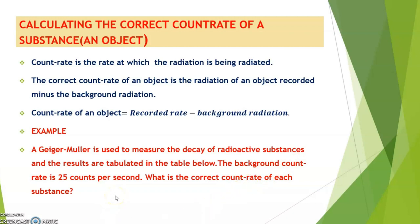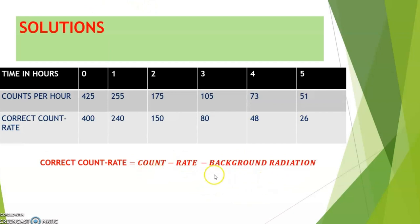Before anything, or before the substances are actually introduced in that space, it is found that the background count rate is 25 counts per second. What is the correct count rate of each substance now? Let's take a look at that particular table of the recordings.